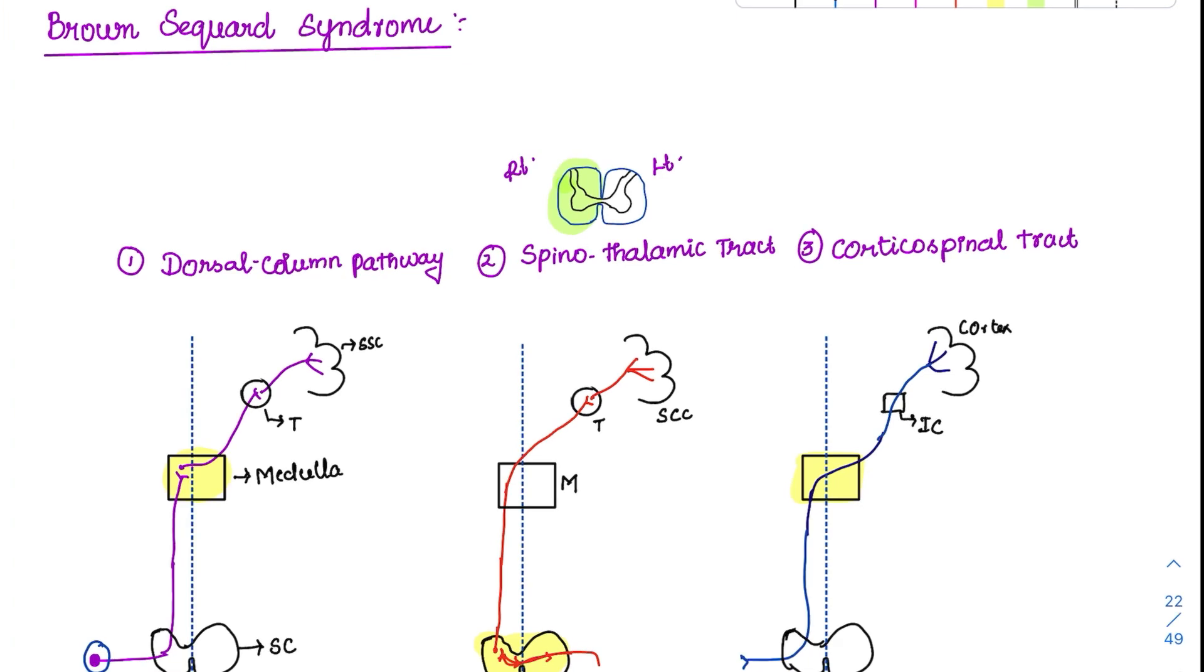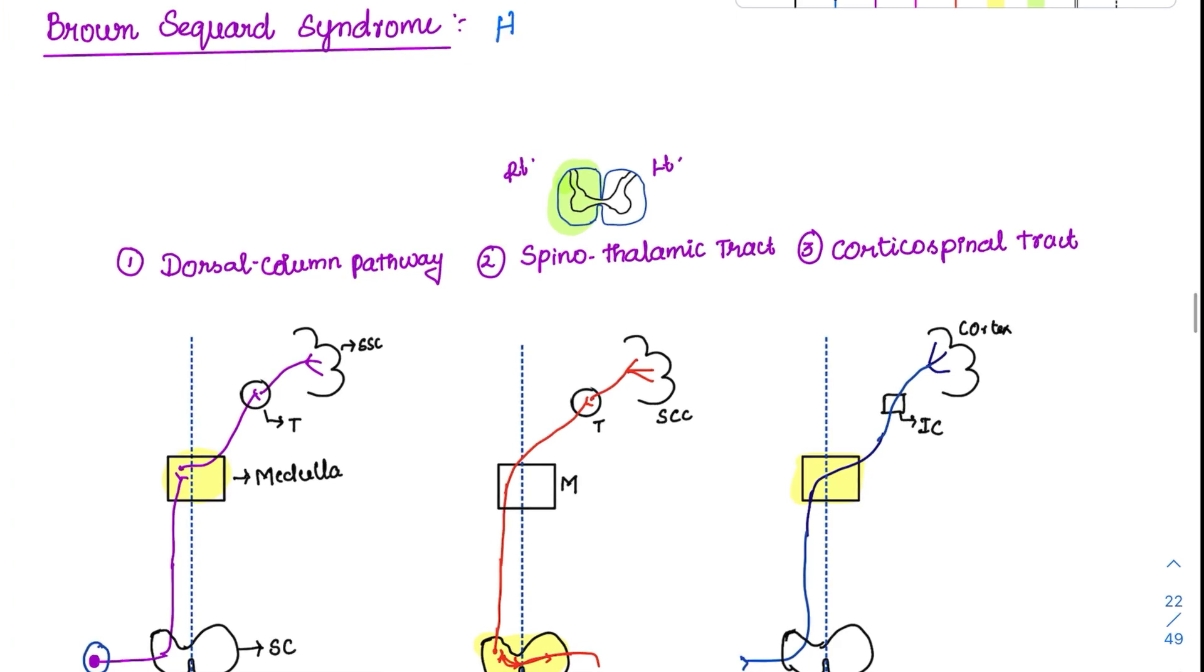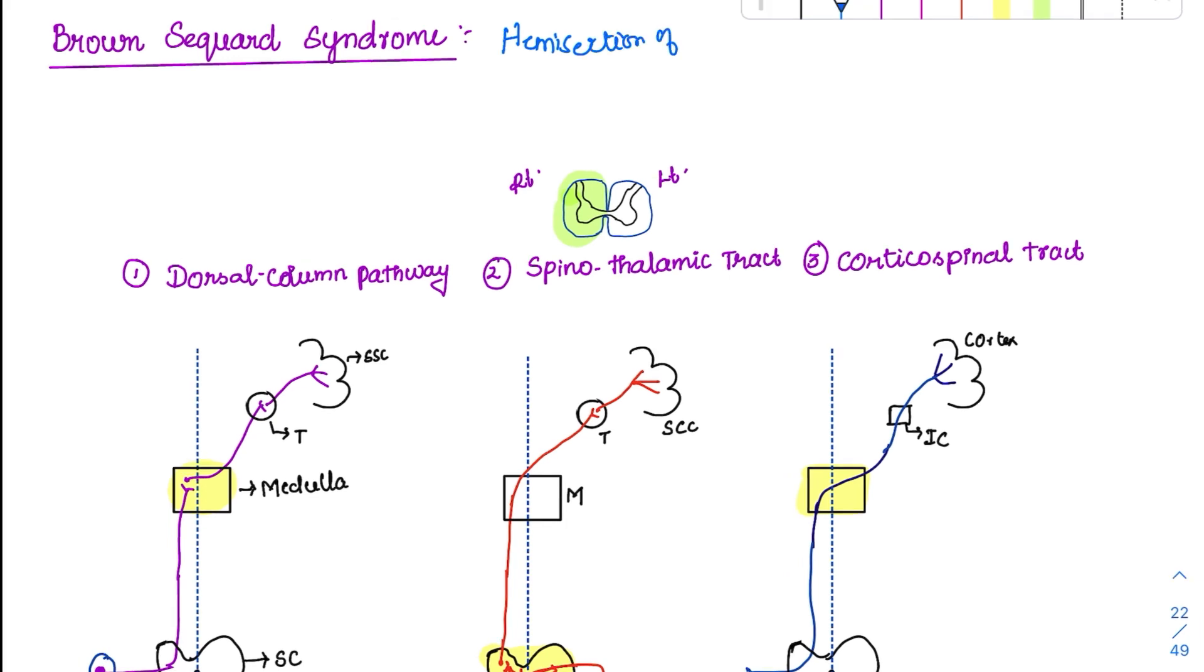We have seen that Brown-Séquard syndrome is nothing but the hemisection of spinal cord. We are doing a hemisection at the spinal cord level. That is most important. So we are not cutting at any other level. We are doing it at the spinal cord level.